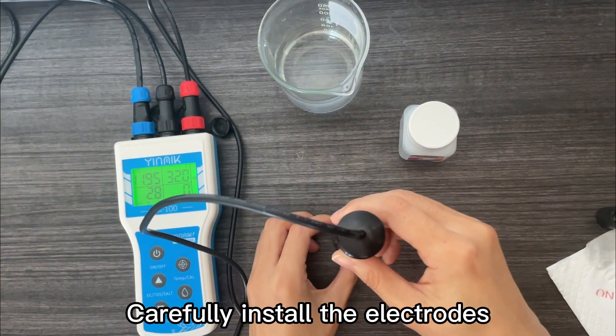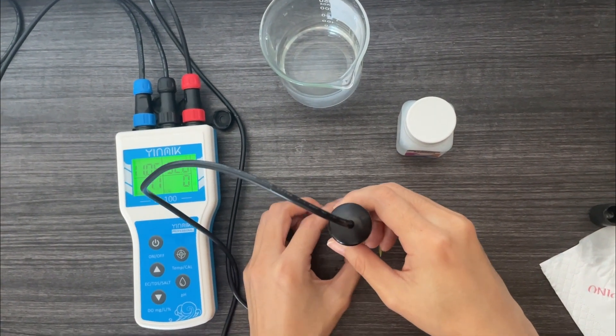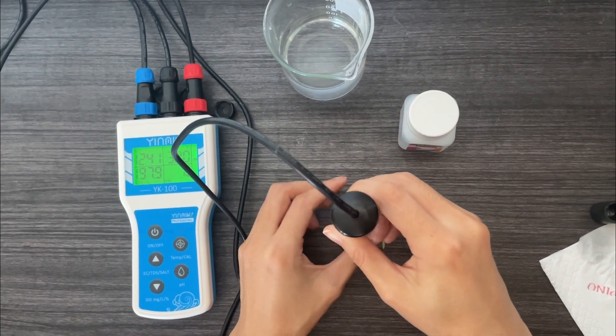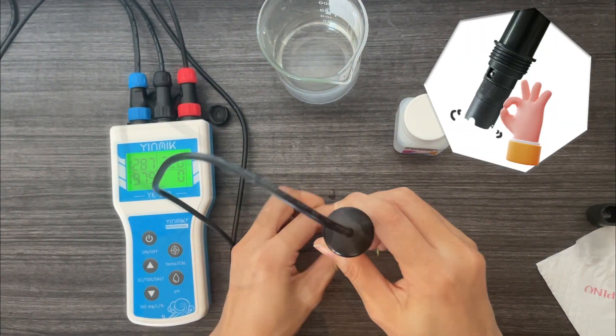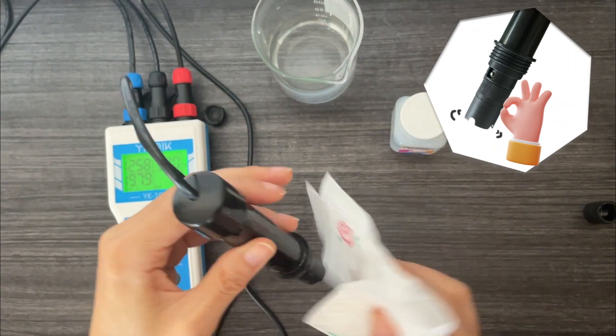Carefully install the electrodes. If excess liquid spills, don't worry, just wipe it up. If there are air bubbles in the membrane, flick them away with your fingers.